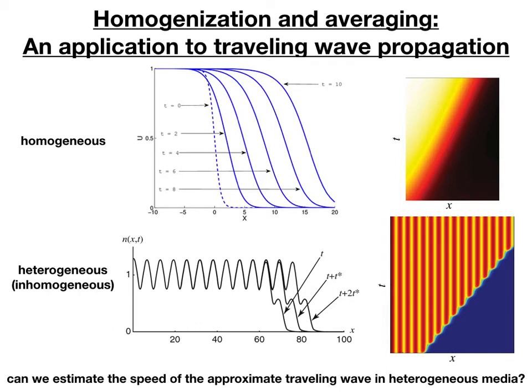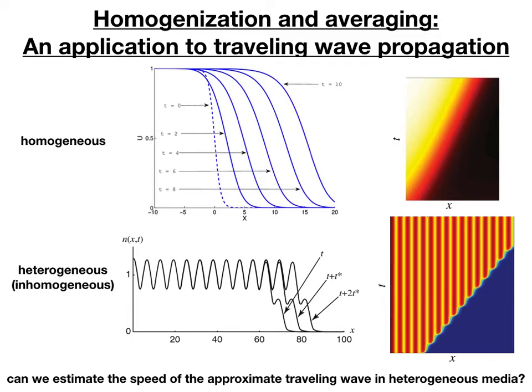We're going to use a homogenization technique, which is not just classical averaging. We'll talk about why classical averaging might fail in this case. This is all based on a paper by Jim Keener from the year 2000 in Physica D, looking at the impact of heterogeneity on nonlinear waves. Not only can heterogeneity slow waves, it can also lead to pinning of waves — where the front slows to a stop and you just have a standing front profile solution.